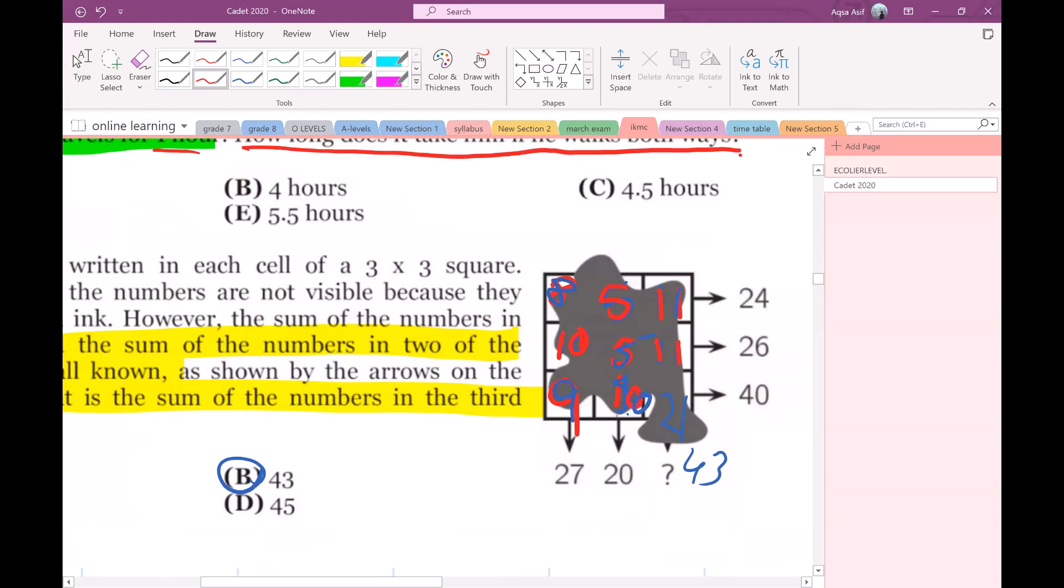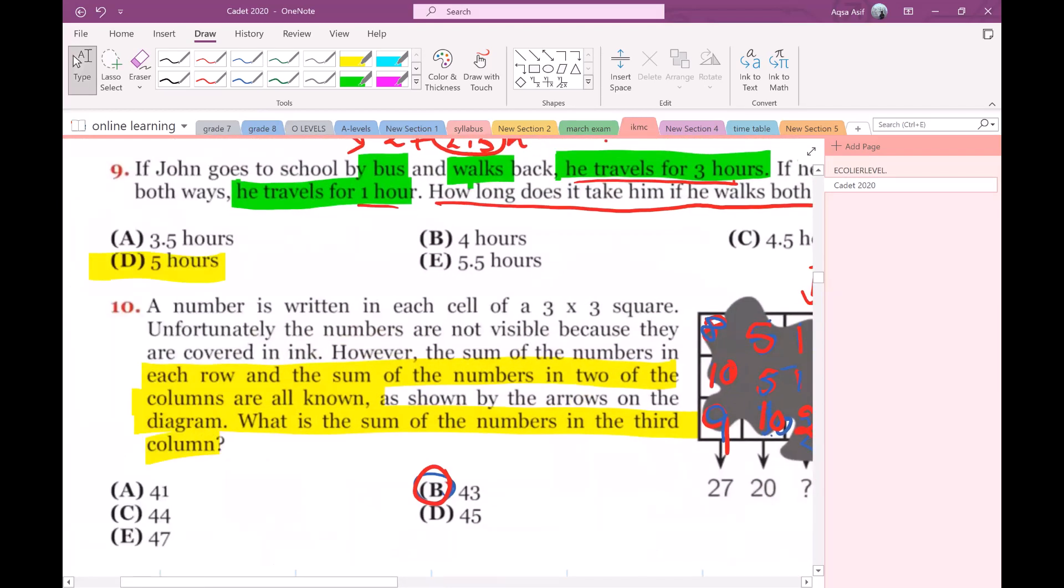So I'm left with the last box. It has to be 21 in order to make sure that the rows and columns match the answer. 11 plus 11 plus 21 will give me 43. So this is the answer to question number 10.